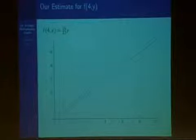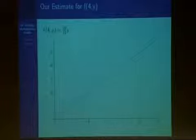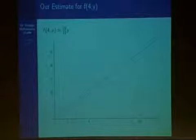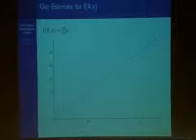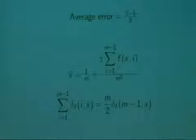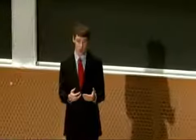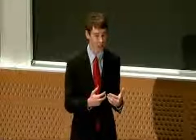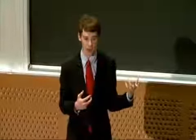This becomes more apparent if we shift into just one period. The period for delta sub f of (4, y) is 12, because that's the least common multiple of all numbers 1 through 4. Examining how f(4, y) operates over this period, we notice we need to raise our linear approximation to get a more accurate result. We can determine that the average error is equal to (x-bar minus 1) / 2, obtained from two lemmas derived from the periodicity theorem, the symmetry theorem, and recursive relations for delta sub f of (x, y) in terms of delta sub f of (x−1, y).